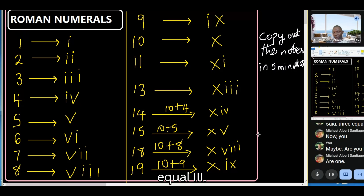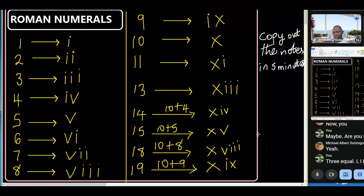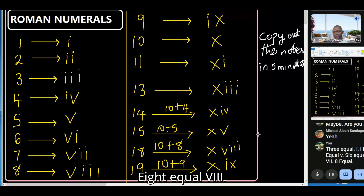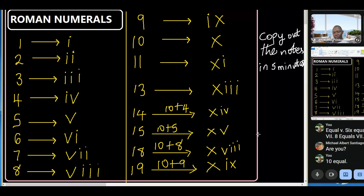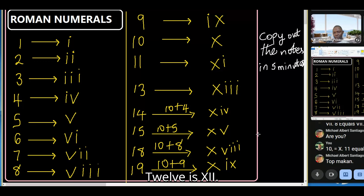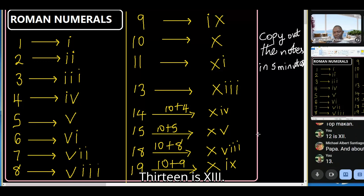Three equals III. Four equals IV, five equals V, six equals VI, seven equals VII, eight equals VIII, nine equals IX. Ten equals X, eleven equals XI, twelve is XII.